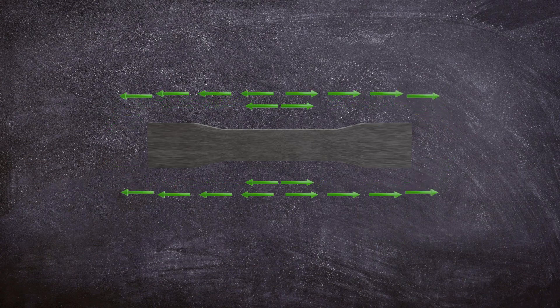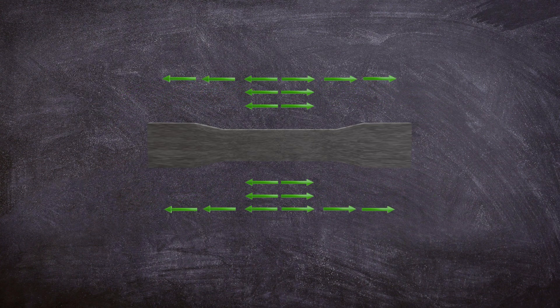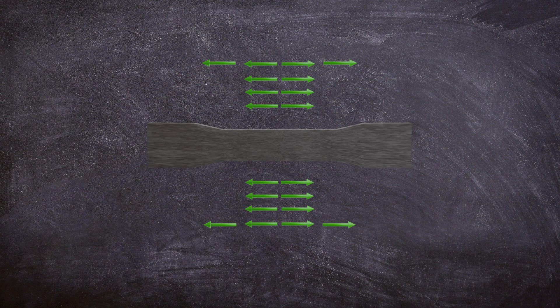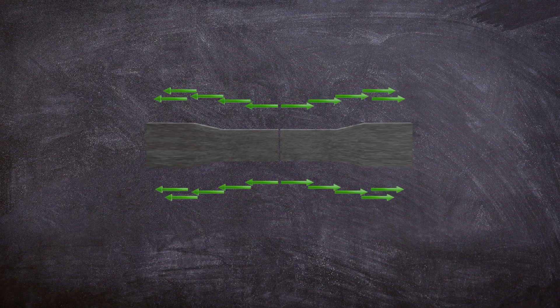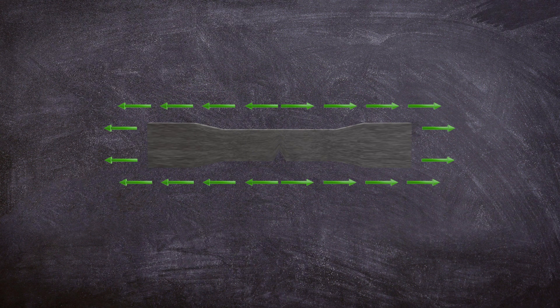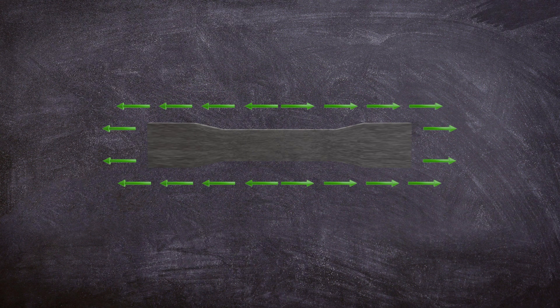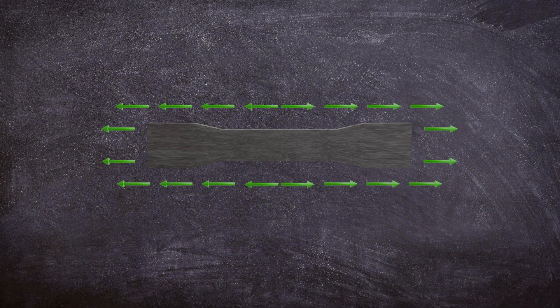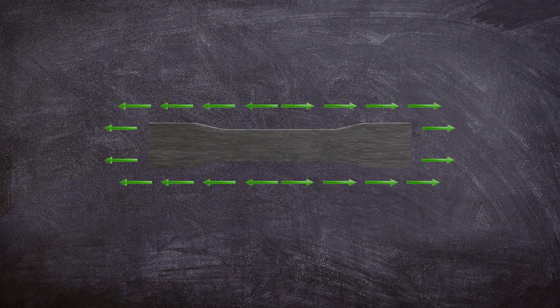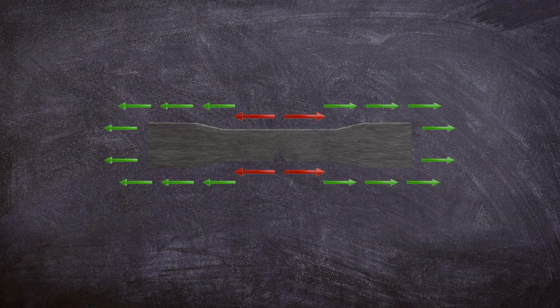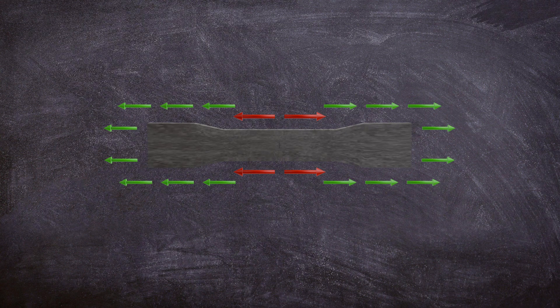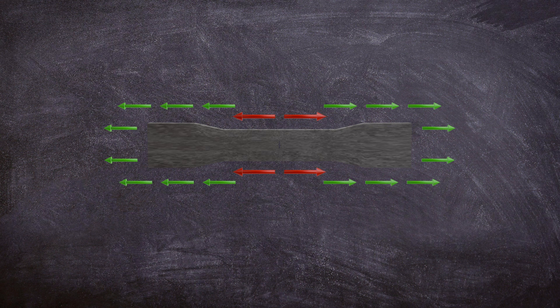Fracture due to stress concentration occurs when a material fails under stress that exceeds its local strength, typically initiated at a flaw or sharp feature in the material. Unlike uniform stress distribution, which assumes that forces are evenly spread across the material, stress concentration refers to the amplification of stress at points of irregularity, such as cracks, sharp corners, notches, or holes. These points act as stress risers, significantly increasing the likelihood of failure.